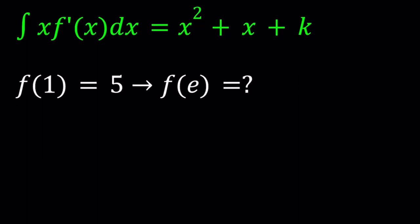Hello everyone. In this video we're going to be solving a functional equation with an integral. We have the integral of x times f prime of x dx equals x squared plus x plus k, and we're also given that f of 1 is equal to 5. We're going to evaluate f of e, e being Euler's number.